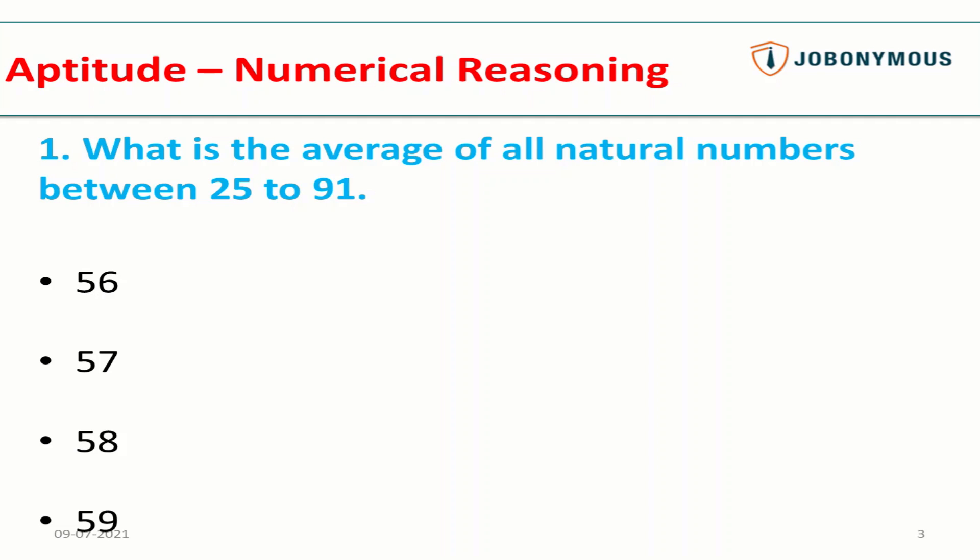The correct answer here is 58. You have to do nothing except find the average of the first and last number. So 25 plus 91 divided by 2, which is 116 divided by 2, equals 58. That's your answer. If you get any question like this, you can just find the average of the first and last number. You don't have to make tedious calculations.